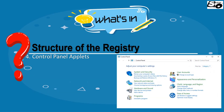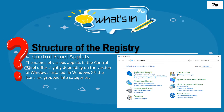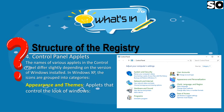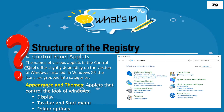Number four is Control Panel Applets. The names of applets in the Control Panel differ slightly depending on the version of Windows installed. In Windows XP, the icons are grouped into categories. Appearance and Themes contains applets that control the look of Windows — Display, Taskbar and Start Menu, and Folder Options.